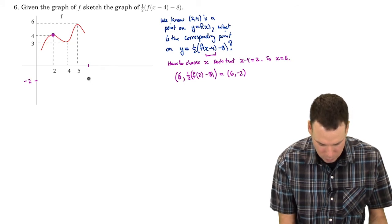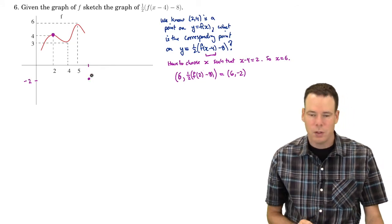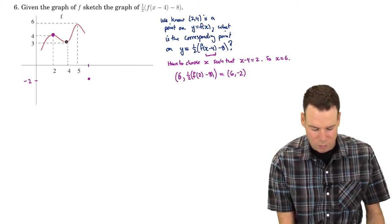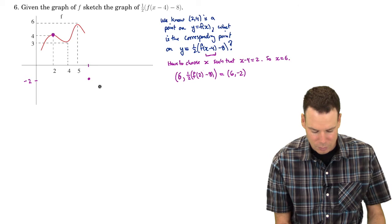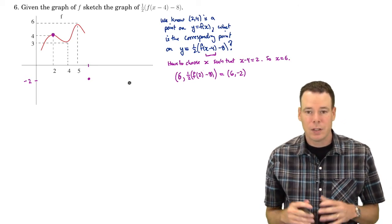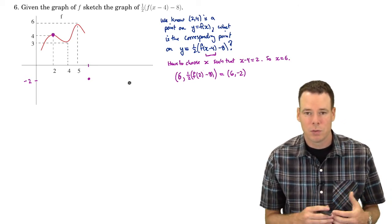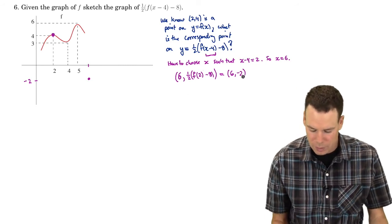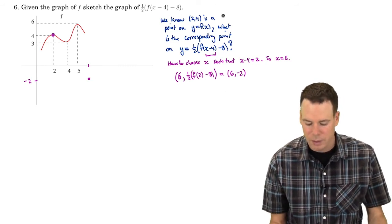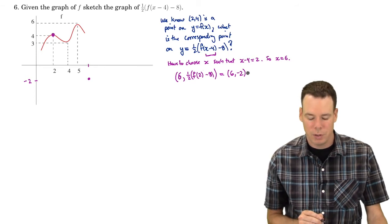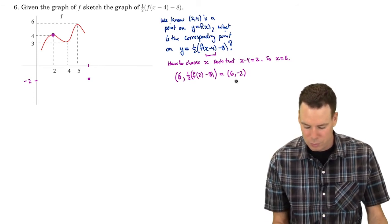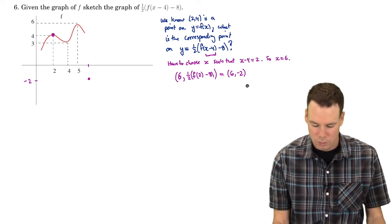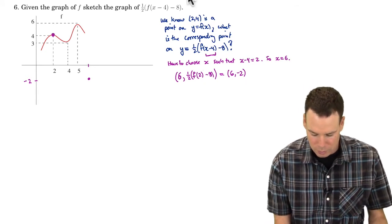So that point on the original function moves to (6, −2). We can do this for all special points along the graph, plot them, and connect them. That's really the idea behind transformation properties — they tell us how to do this all at once. This is the underlying understanding of where those transformation properties come from: follow what each point maps to.